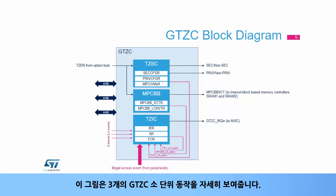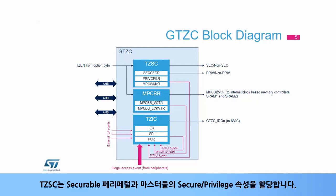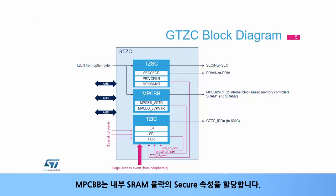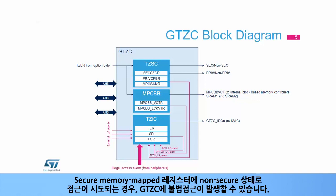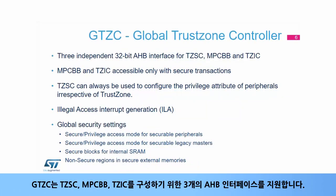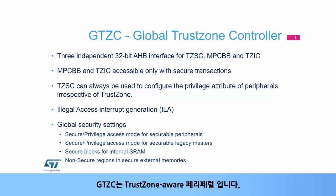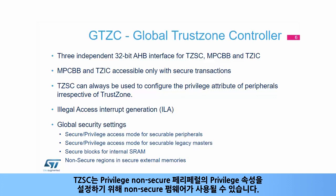This figure details the operation of the three GTCC subunits. The TZSC is in charge of assigning the secure and privileged attributes of securable peripherals and masters. The MPCBB1 is in charge of assigning the secure attribute of internal SRAM blocks. The TZIC signals illegal accesses to the Cortex M33 core. Illegal accesses can occur internally or externally to the GTCC when a non-secure access to secure memory-mapped registers is attempted. The GTCC supports three independent AHB interfaces for configuring the TZSC, the MPCBB and the TZIC. The GTCC is a TrustZone Aware peripheral. The MPCBB and TZIC are accessible only with secure transactions, but the TZSC can be used for non-secure firmware to set the privileged attribute of non-secure peripherals.